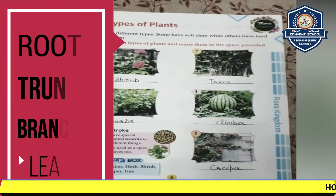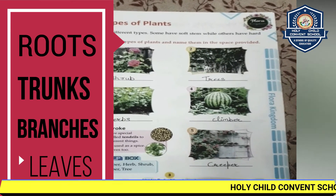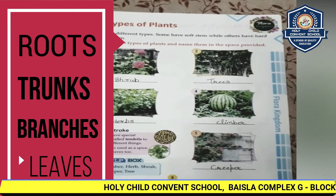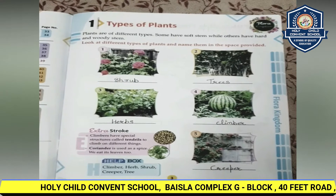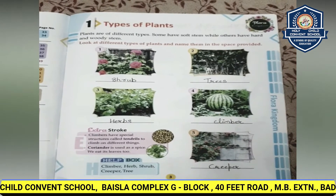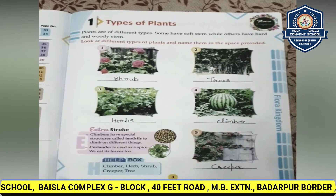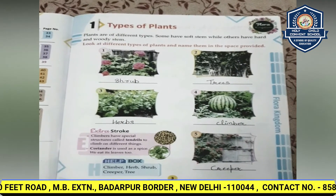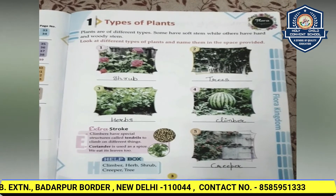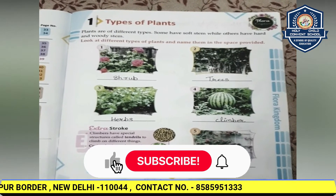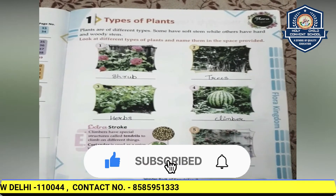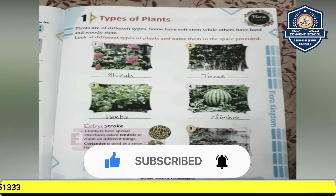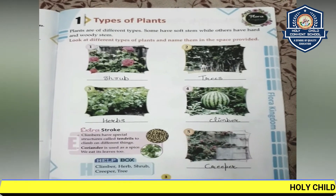The four main parts of trees are the roots, trunk, branches, and leaves. The roots of a tree are usually under the ground. Trees and shrubs are both woody plants. Trees contribute to their environment by providing oxygen, improving air quality, conserving water, and preserving soil.